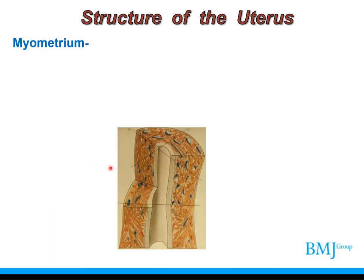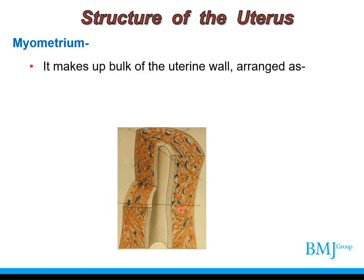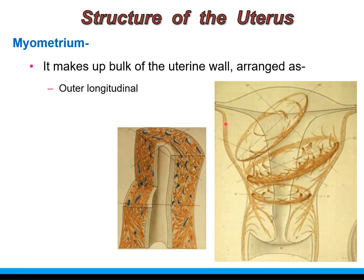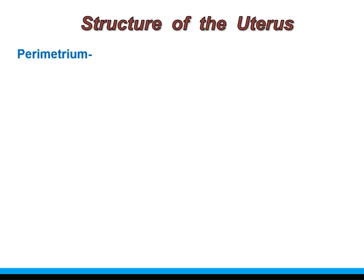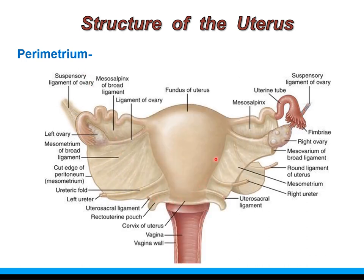The myometrium makes up the bulk of the uterine wall. It is formed by smooth muscle fibers arranged as outer longitudinal fibers, middle circular fibers, and inner reticular fibers which are irregularly arranged. The perimetrium is the visceral layer of peritoneum covering the different parts and surfaces of the uterus.